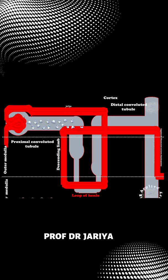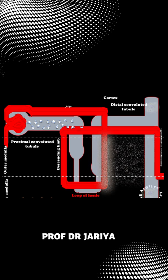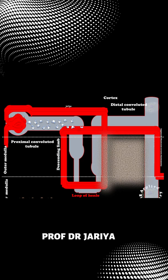Kidneys can only conserve water through osmosis using the sodium chloride gradient. The ascending limb of the loop of Henle is impermeable to water. It pumps out sodium chloride from the urine back into the blood, creating a hyperosmotic environment in the medulla and the vasa recta.